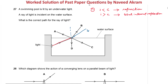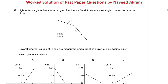Since there is no refracted ray bending away from the normal among the options, there must be total internal reflection. In total internal reflection, the angle of incidence equals the angle of reflection. This is the angle of incidence, and this will be the angle of reflection. So the correct answer for this question is option C.